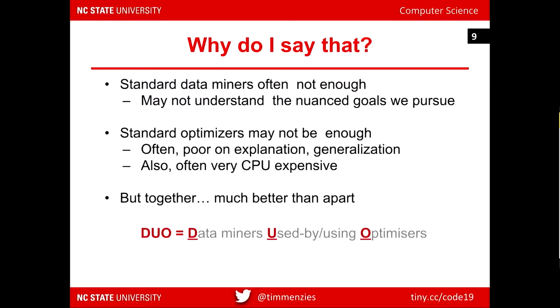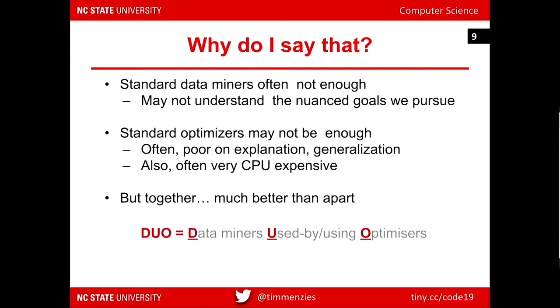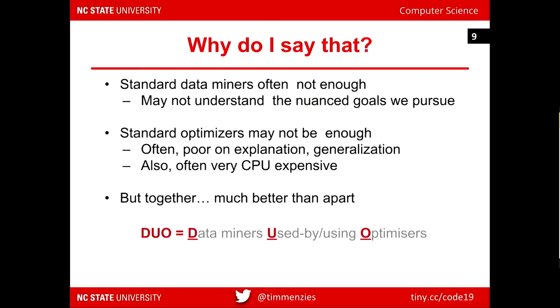Standard data miners have problems handling certain business goals. I showed a linear regression problem where you want to change models using attributes that are cheaper to collect and have less variance. I don't like standard optimizing technology — genetic algorithms have long runtimes. But when I started putting data miners into standard optimizers, I found incredible speedups — orders of magnitude. So I talk about DUO: Data miners Used by Or using Optimizers.